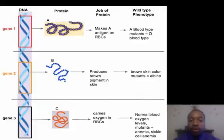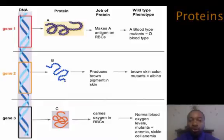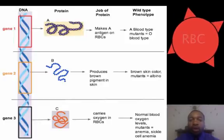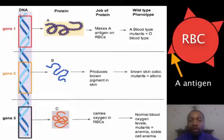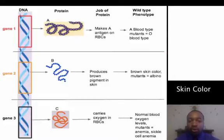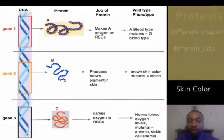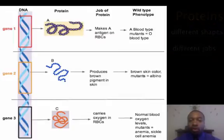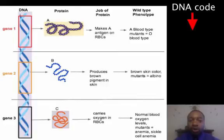Looking at this image, we see our DNA and three different genes. Each gene appears to produce a particular protein, and these proteins differ in their shape and in the job they perform. Protein A is responsible for making the A antigen on our red blood cells, protein B produces the brown pigment in our skin, and protein C carries oxygen in our red blood cells.